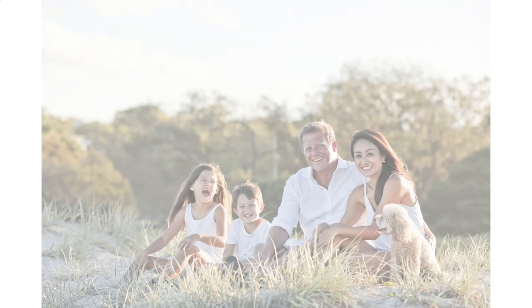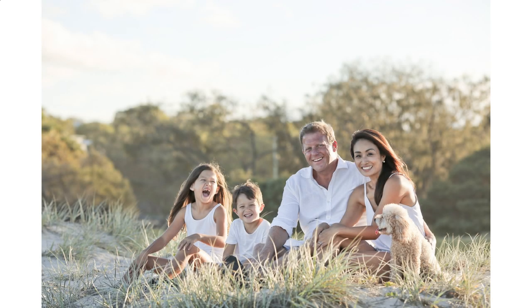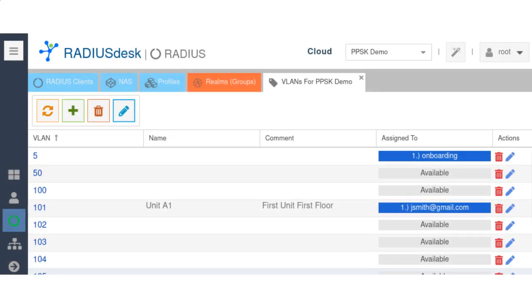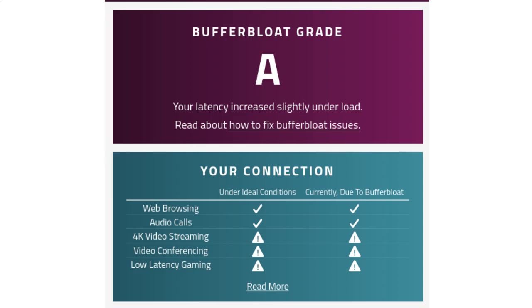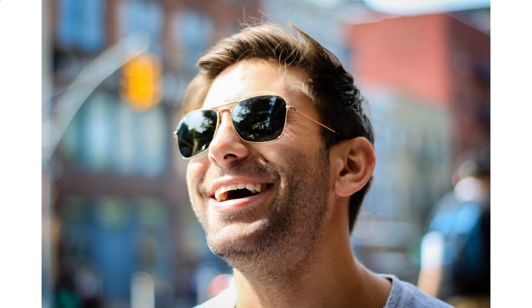Let's illustrate this with a real-world example. Meet the Smiths, a typical home office family in an MDU. Dad's in a critical Teams meeting while working from home. Meanwhile, Junior returns from school and starts downloading a new game. Without effective queue management, Junior's download would disrupt Dad's meeting. But with SQM Profiles, Junior's download is prioritized lower, ensuring Dad's meeting runs smoothly, uninterrupted.